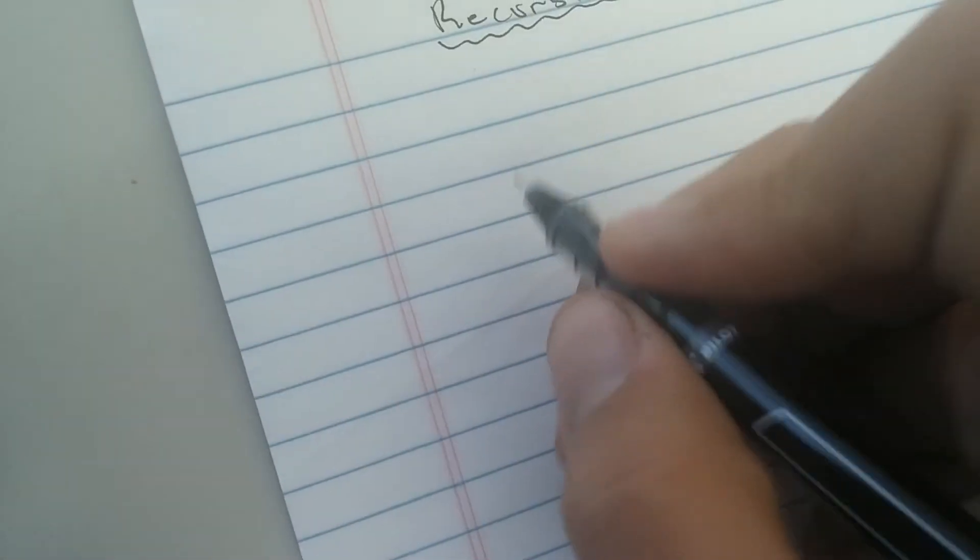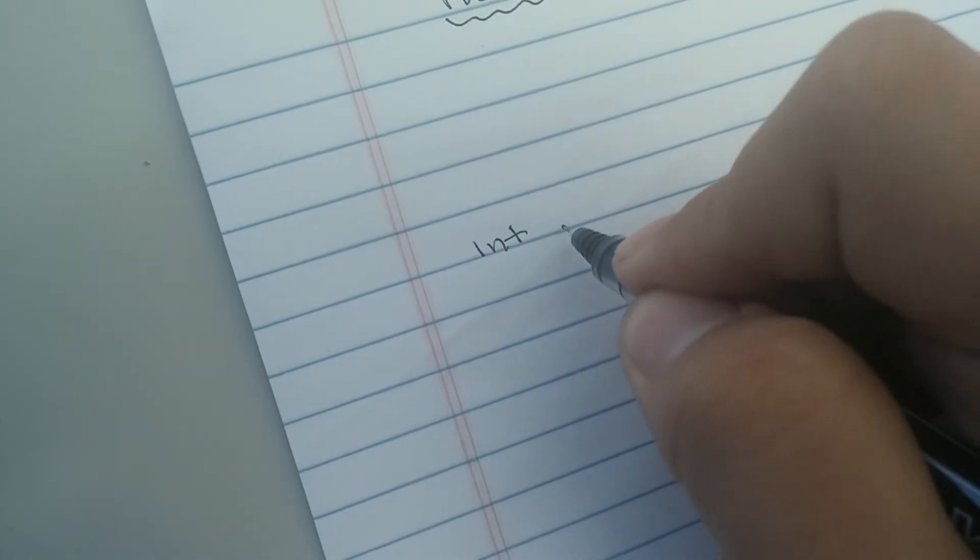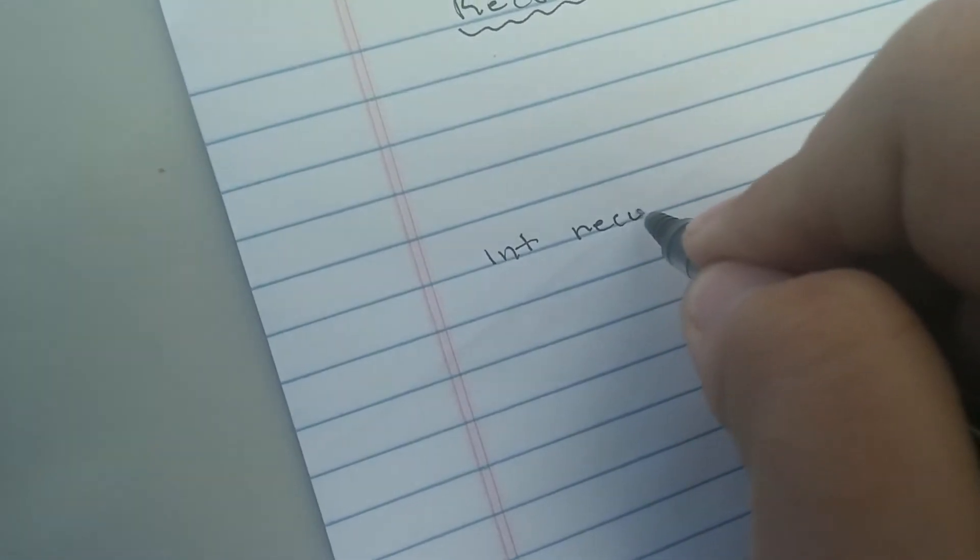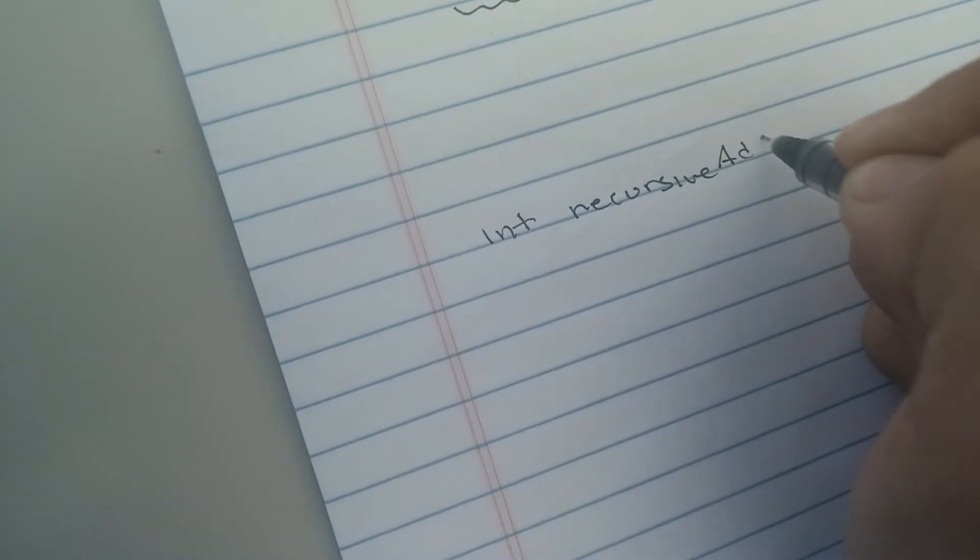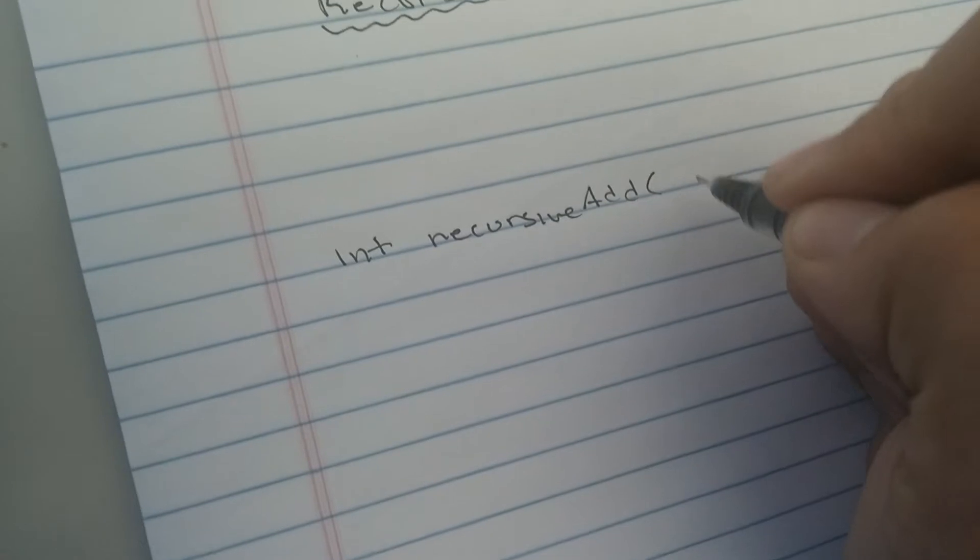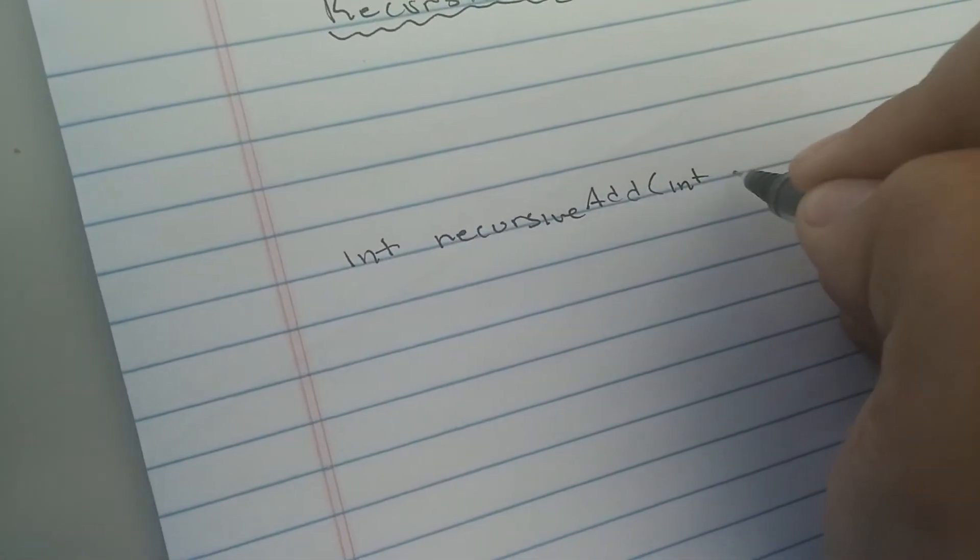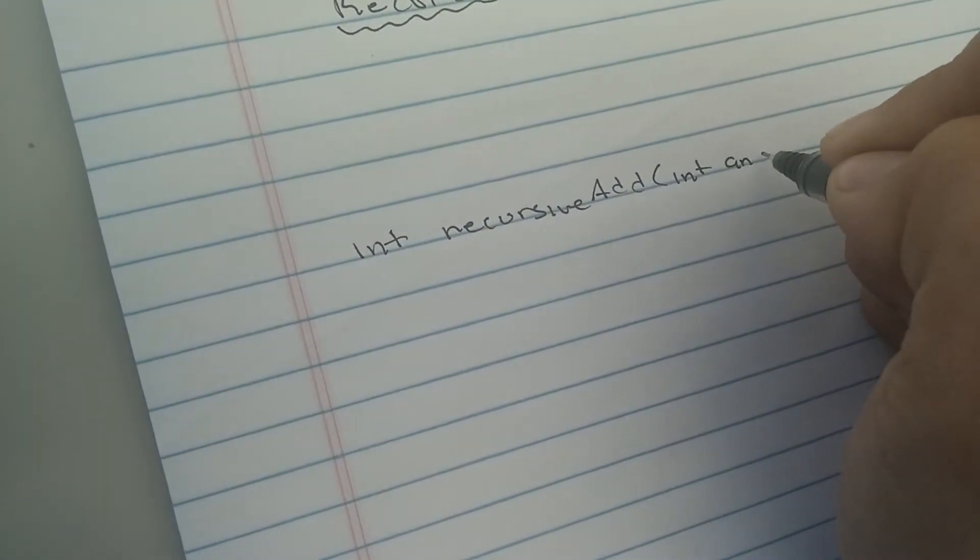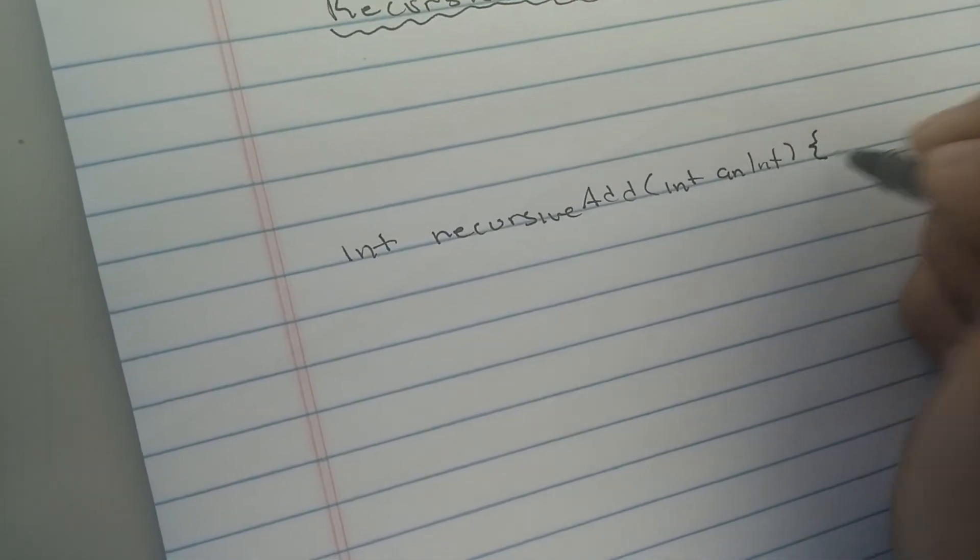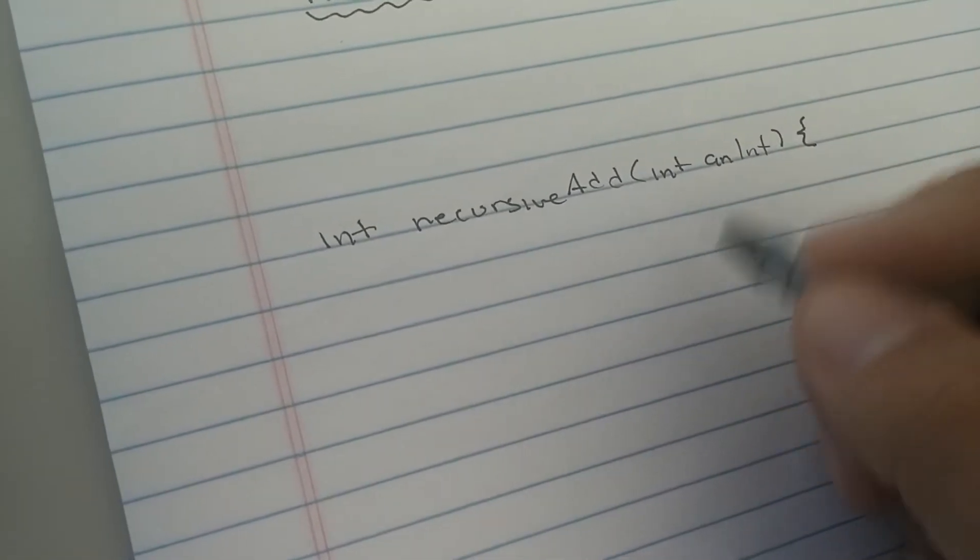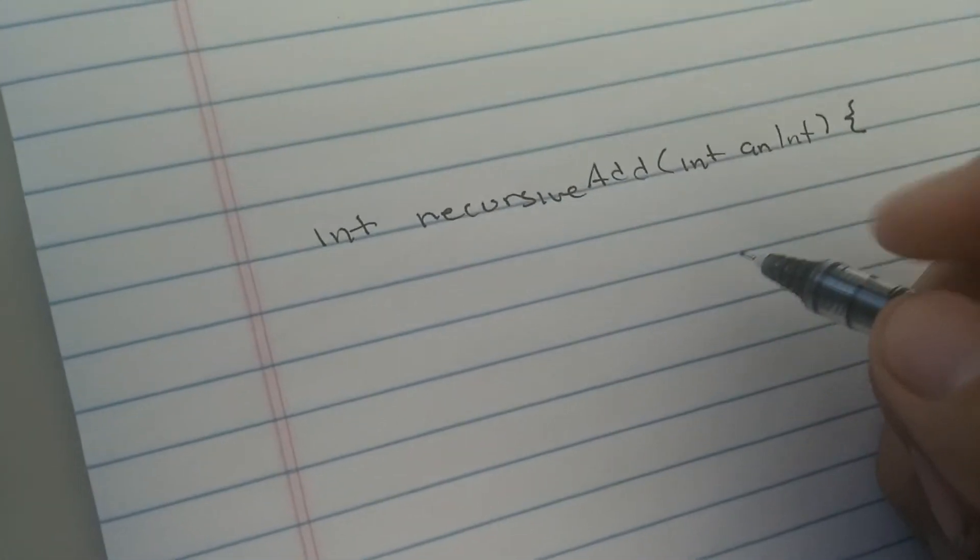So, let's say that we have a function. It's going to return an integer. And we're going to call it recursive add. And we're going to pass it int an int, whatever. Now, how are we going to write this function? This isn't the part I want to focus on so much as why it works, but I'm going to go through this briefly.